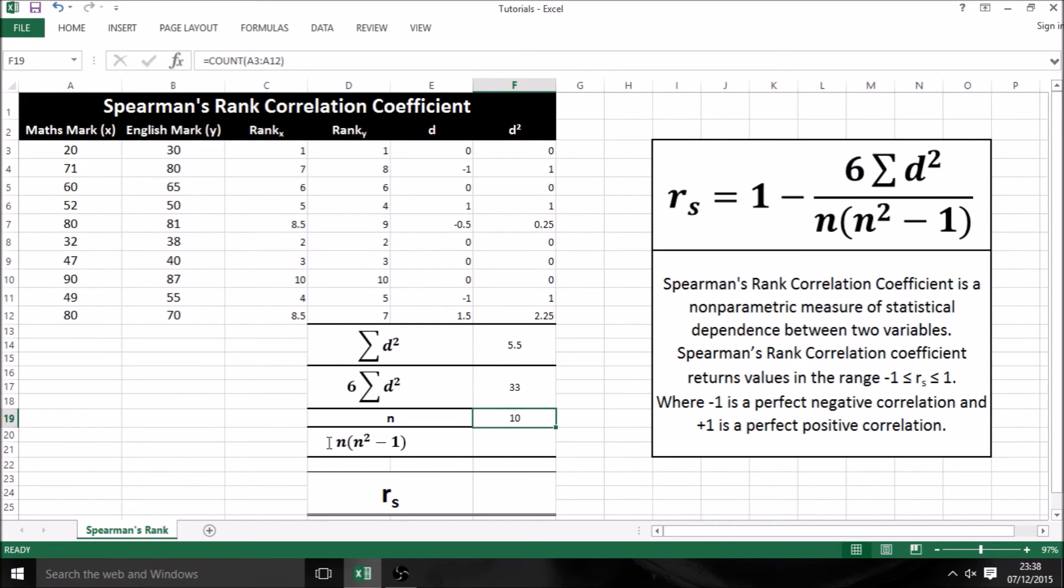Now I'm going to work out n, open bracket, n squared minus 1, close bracket. To do this, it simply equals, then I'm going to select my value of n, then a times sign and open brackets, and I'm going to use my power function from previously. I'm just going to select my value of 10 again, then type in a comma and press 2.